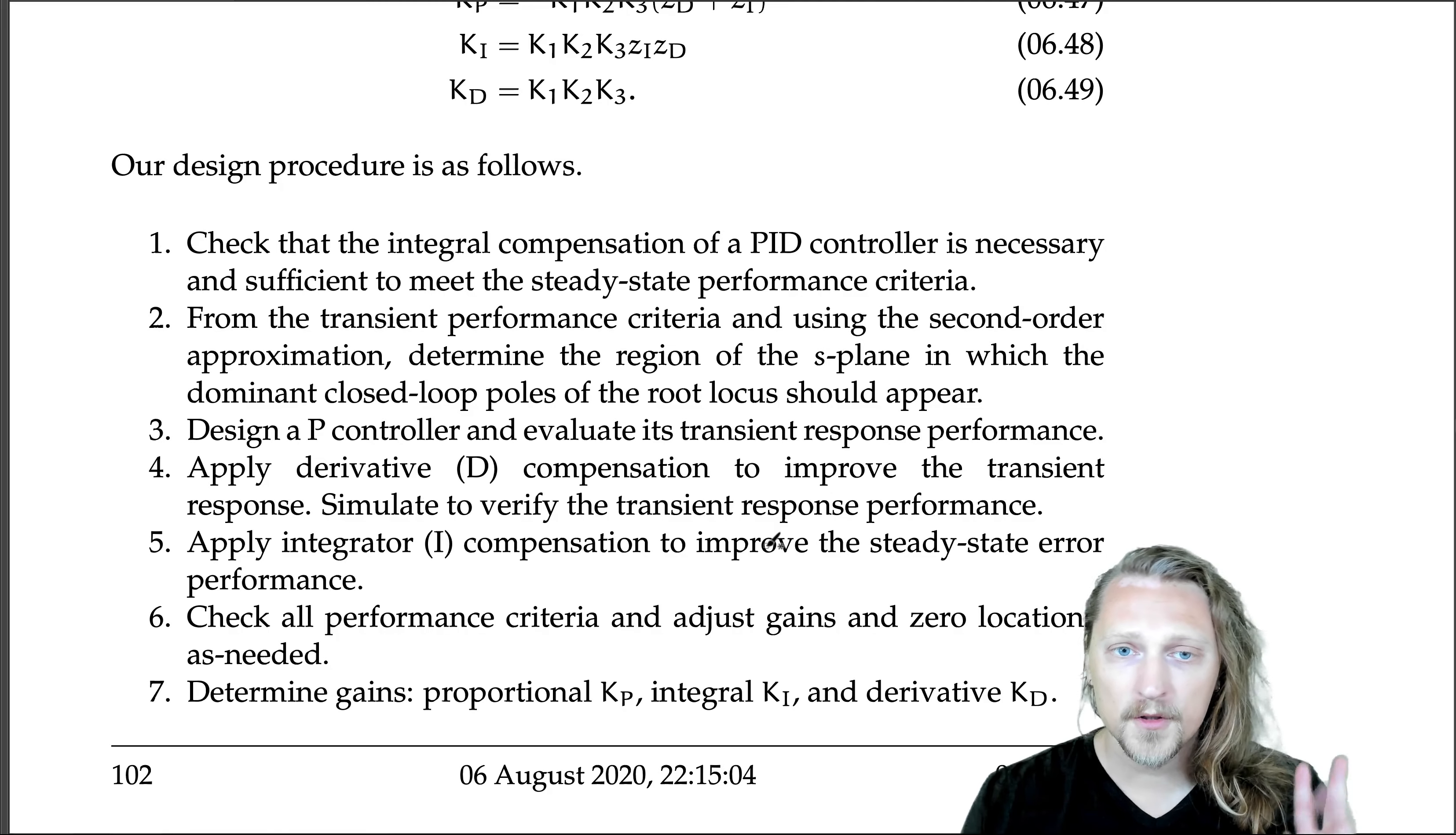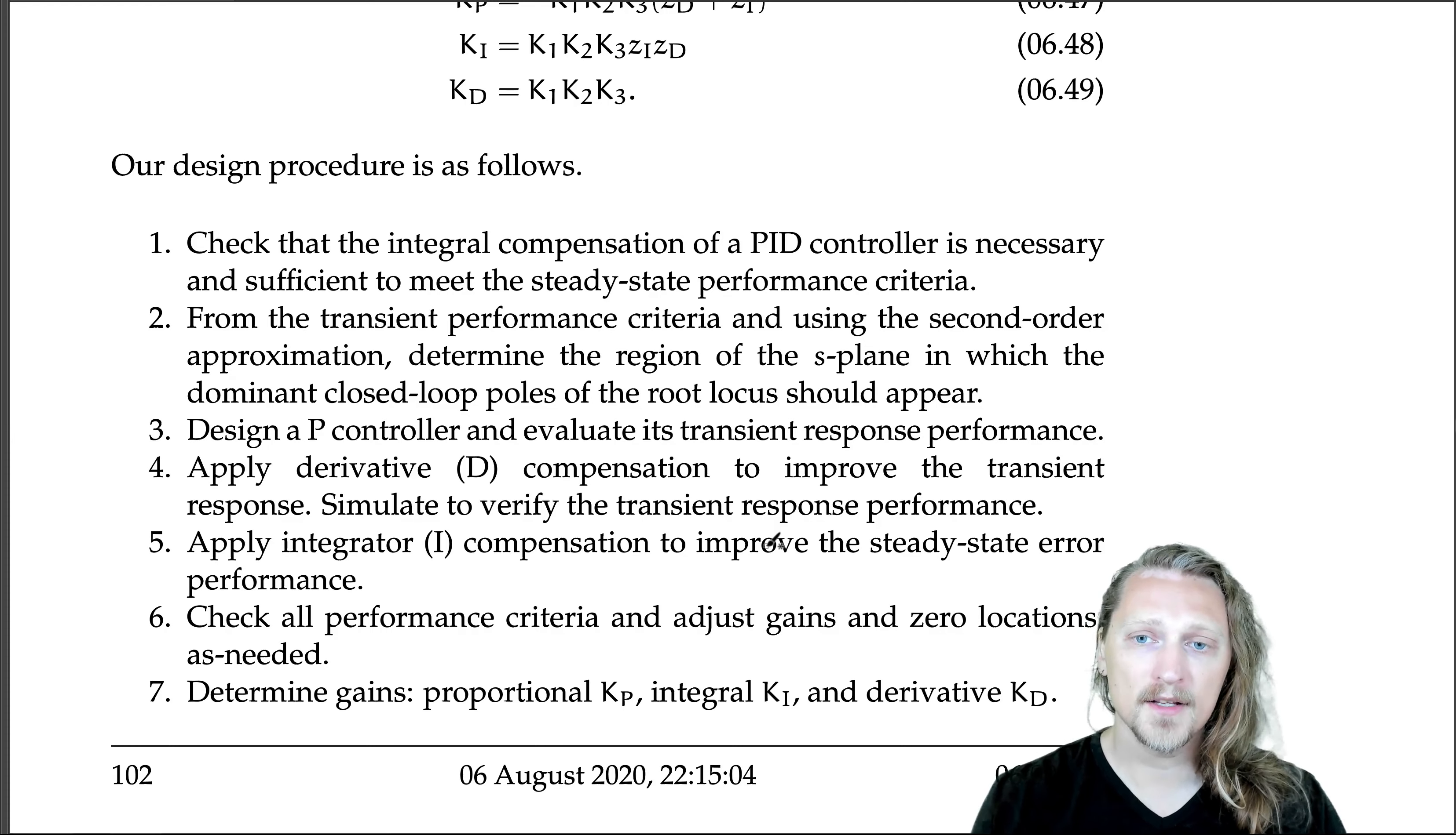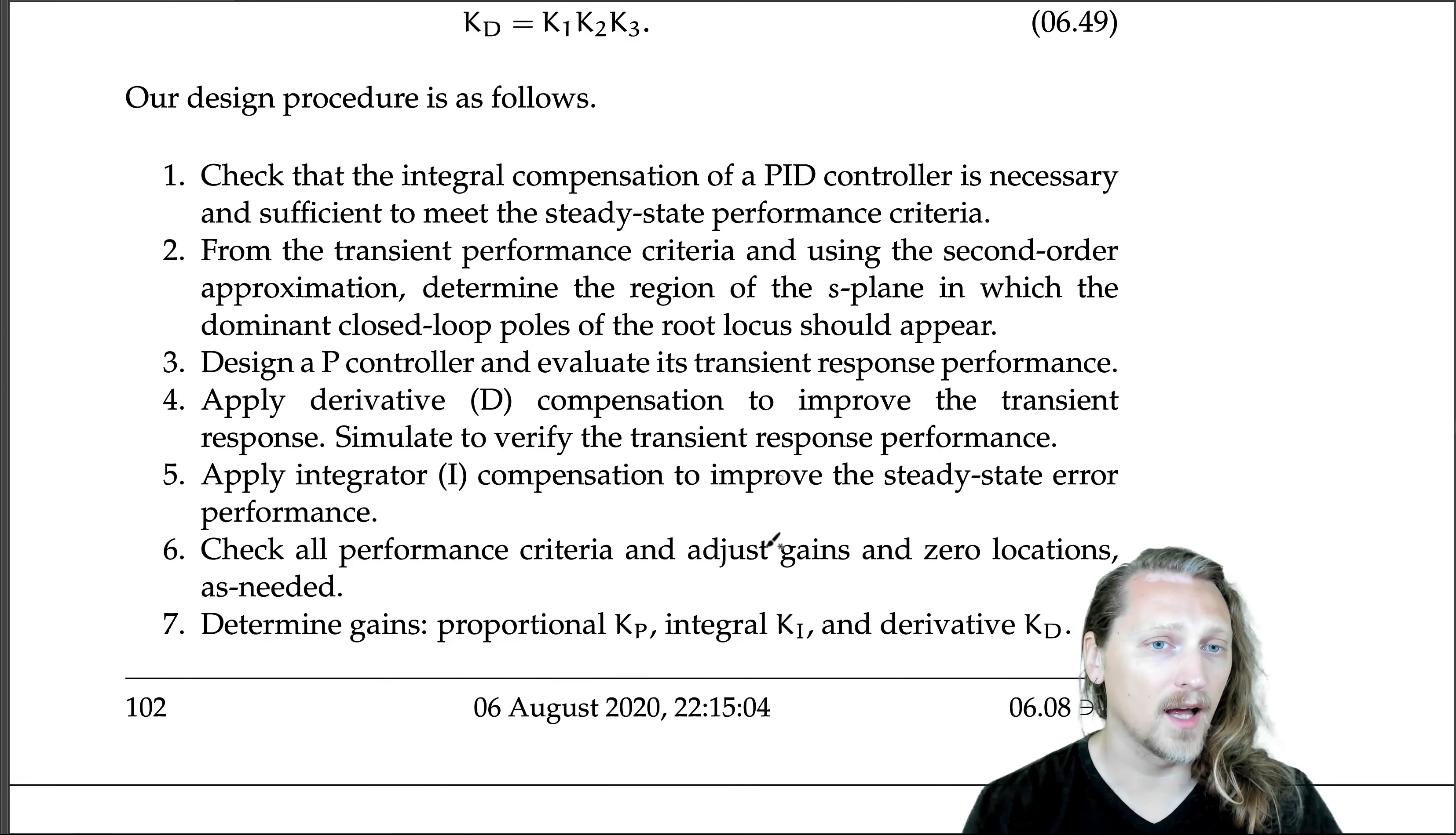Two, from the transient performance criteria and using the second order approximation, as usual, determine the region of the S-plane in which the dominant closed loop poles of the root locus should appear. So as usual, we want to know where we're aiming for in the S-plane for where we want our dominant closed loop poles to lie. And that's primarily determined by the transient response requirements.